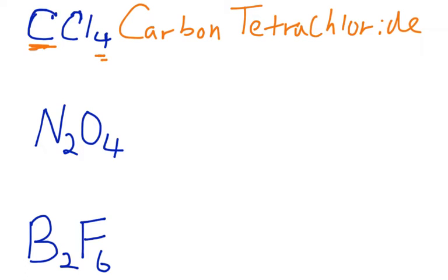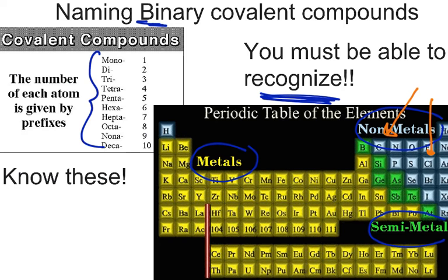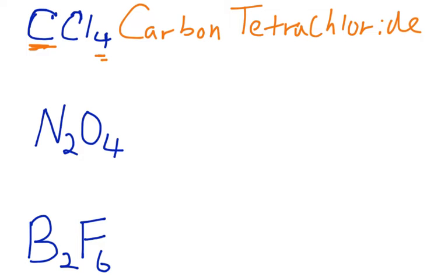In this second example, we see we have nitrogen. If you want to check really quick, nitrogen is also a non-metal. We have oxygen, which is also here, another non-metal. So once again, non-metals coming together to make a compound tells you it's a covalent compound.